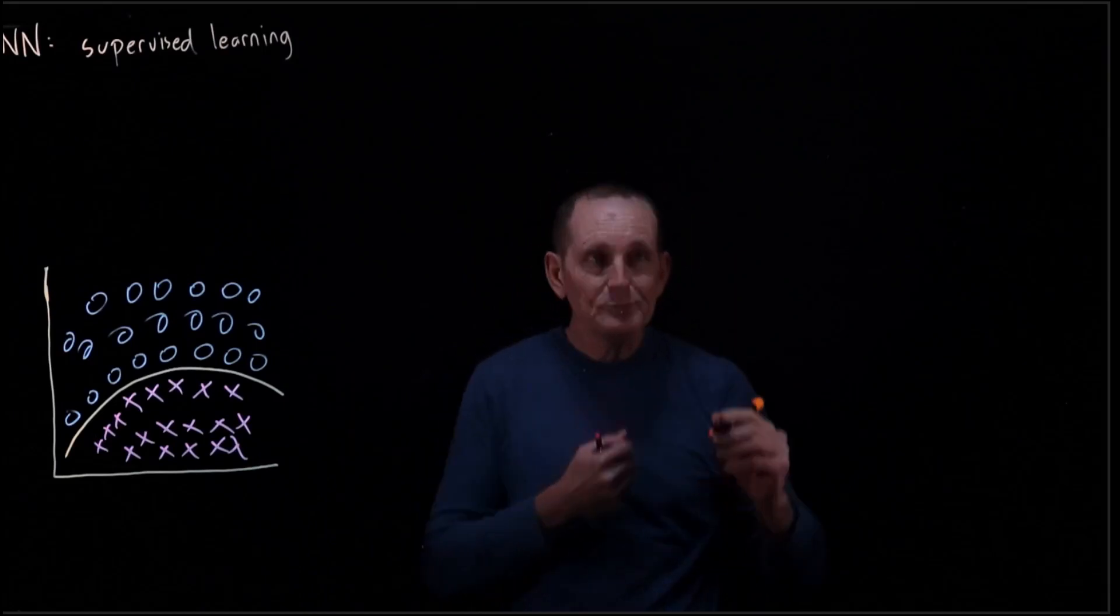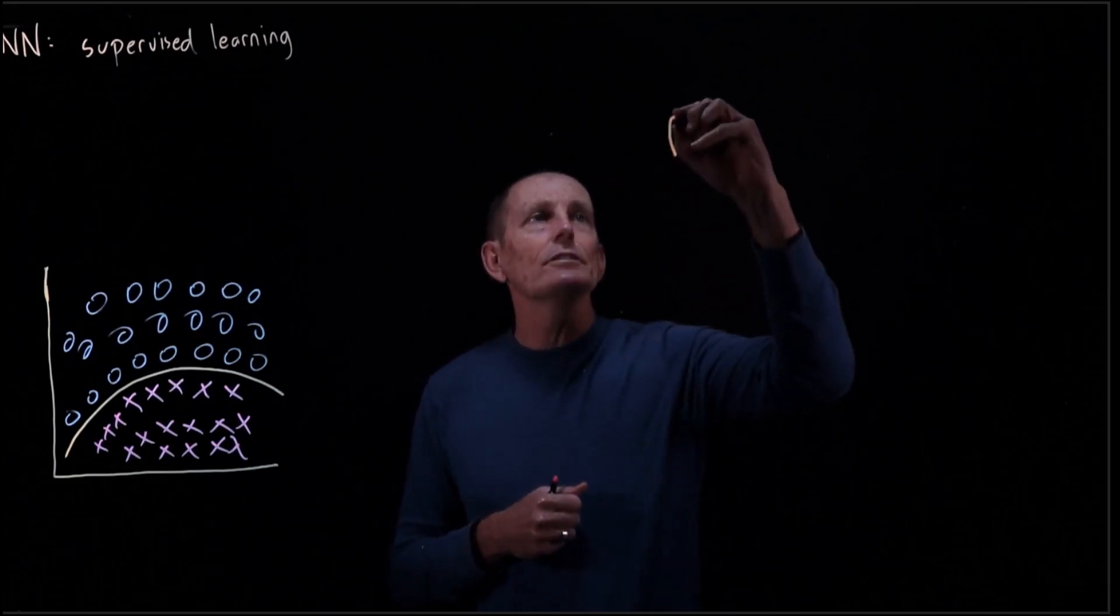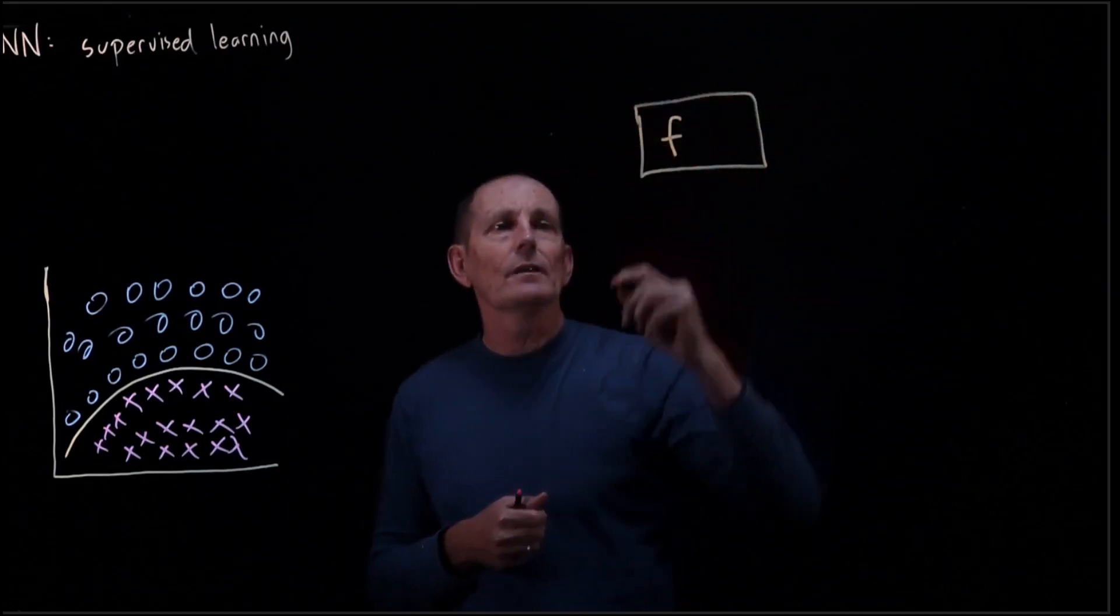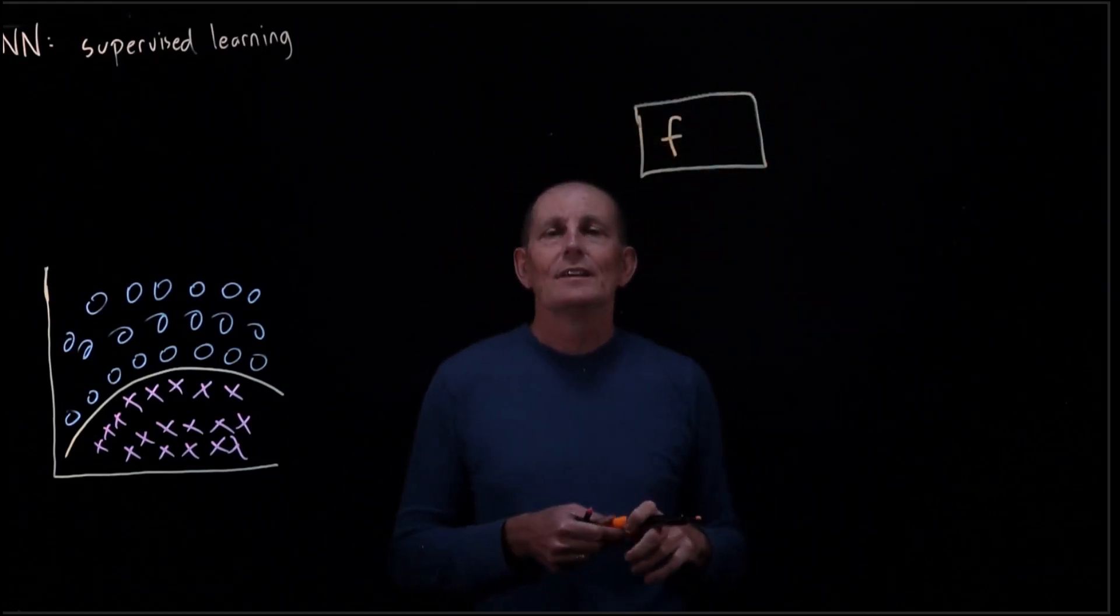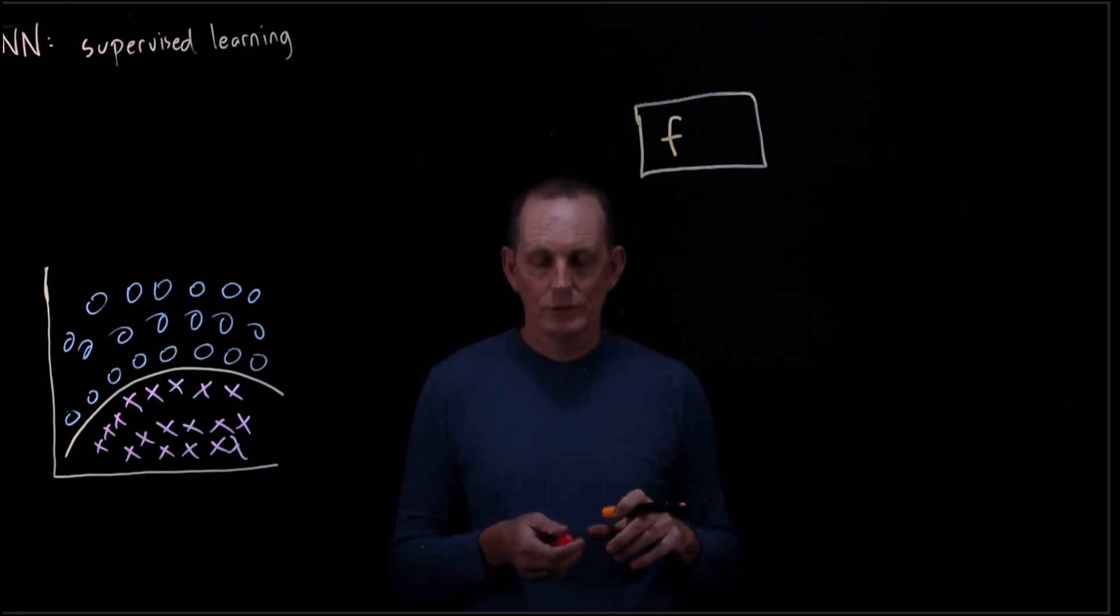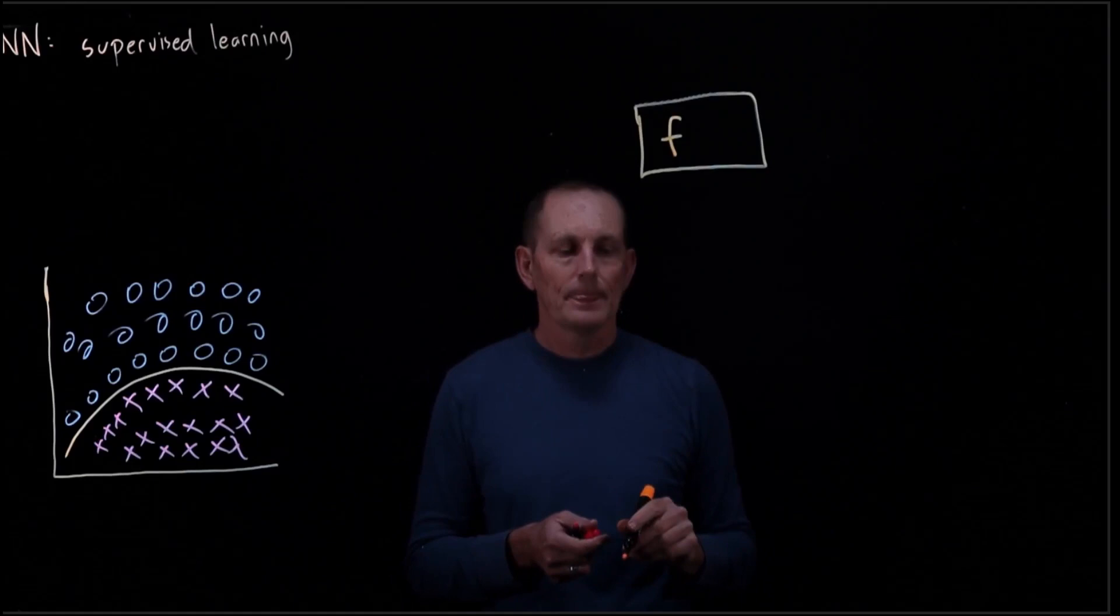So our training looks like this. We have an F. We have determined the shape of that F, so to speak, from what universe it consists of.